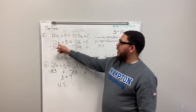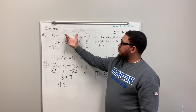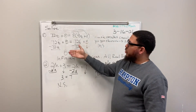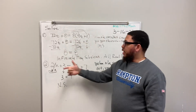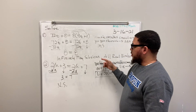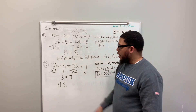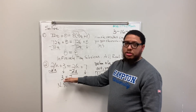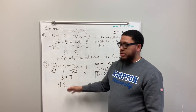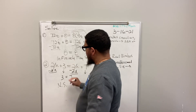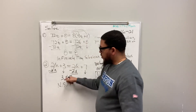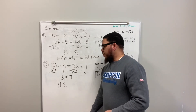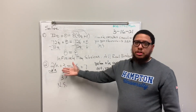If you see a situation where you simplify and end up with the same exact thing on the left and right side, you know you'll end up with infinitely many solutions. And if you end up with a lie or a false statement — like 3 equals 7, and we know 3 does not equal 7 — that means there is no solution to this type of equation.